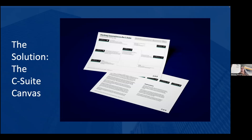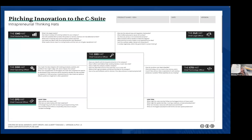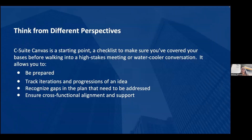One of the tools I mentioned is the 'Pitching Innovation to the C-Suite' canvas. This was created for the Corporate Startup Lab and we use it as part of our capstone program. It really gets at this exact challenge of how do I pitch innovation inside a company — though it can equally be useful if you're pitching to a VC firm. I'm sure you've seen business model canvases and similar tools, but this is all about capturing questions.